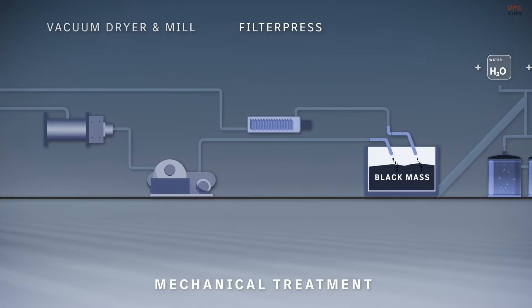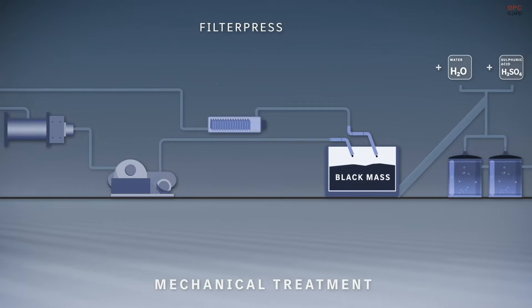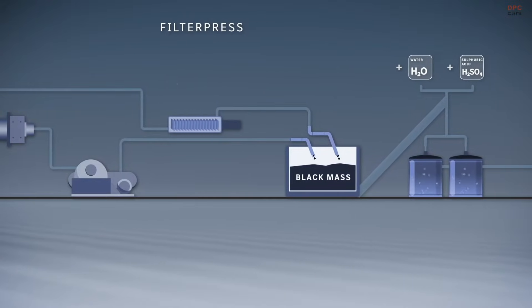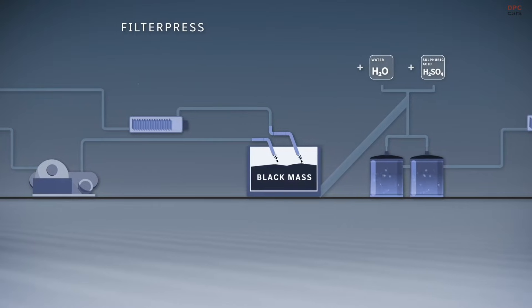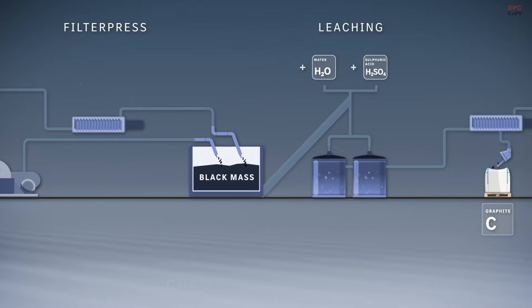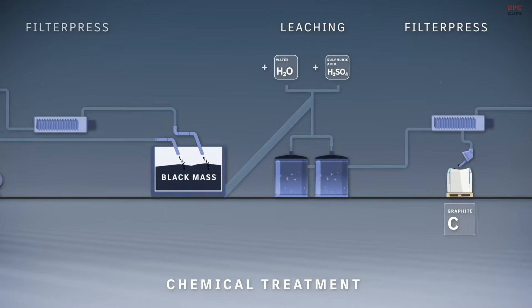The previously separated fine fraction contains the largest proportion of black mass. This is filtered and further processed together with the mass from the coarse material in the hydrometallurgy.